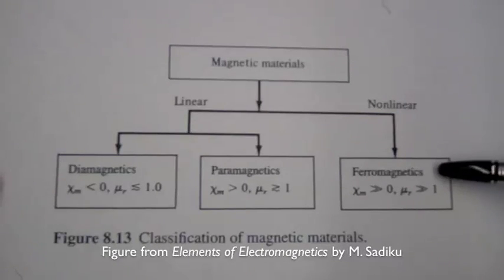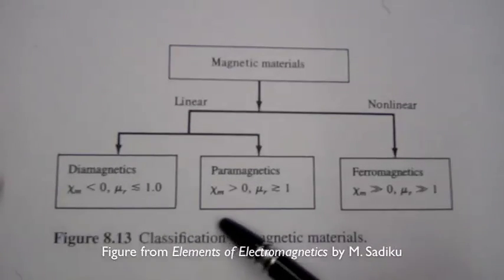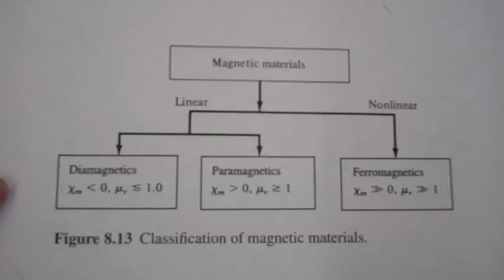Examples are iron, nickel, cobalt. Other materials are referred to as non-magnetic but they are actually affected by a magnetic field. It's just that the effect is very weak.